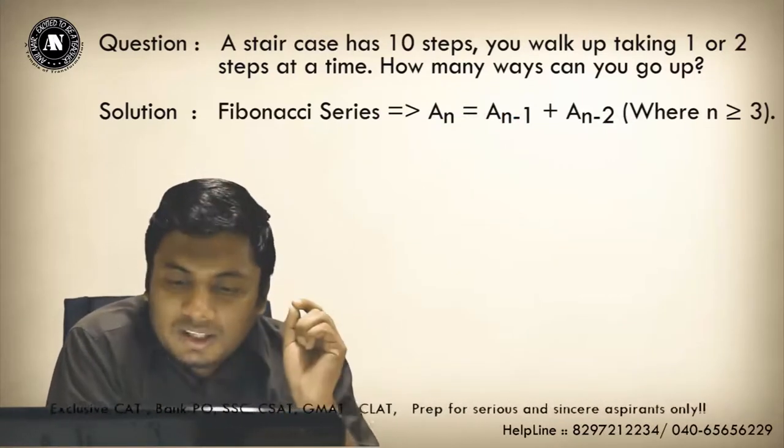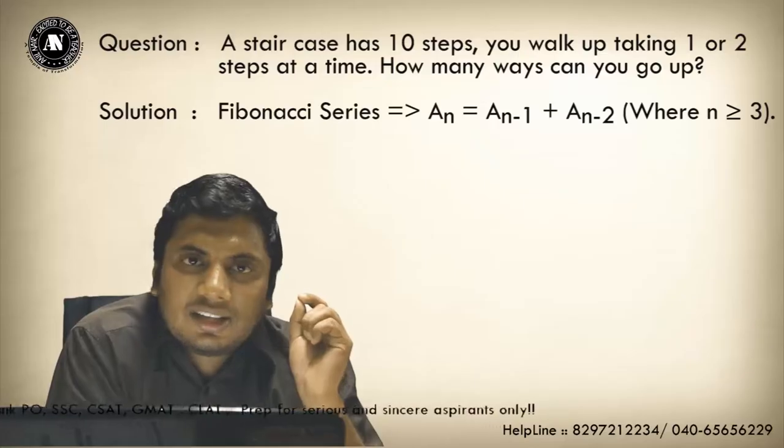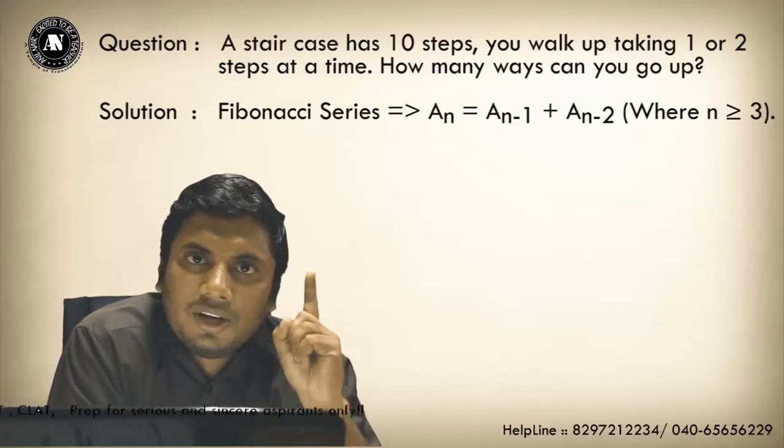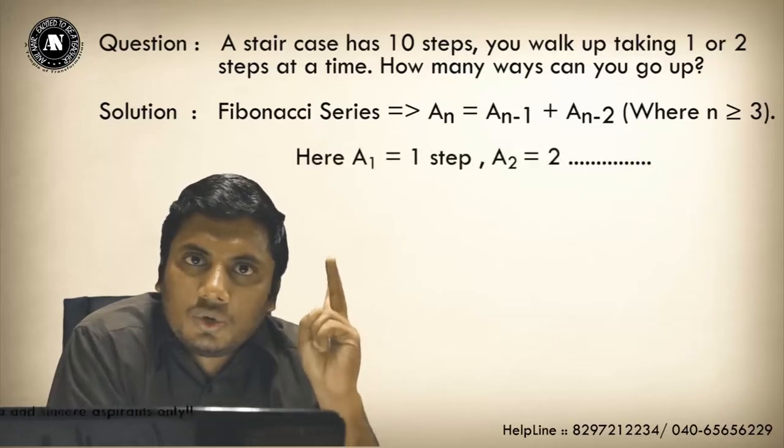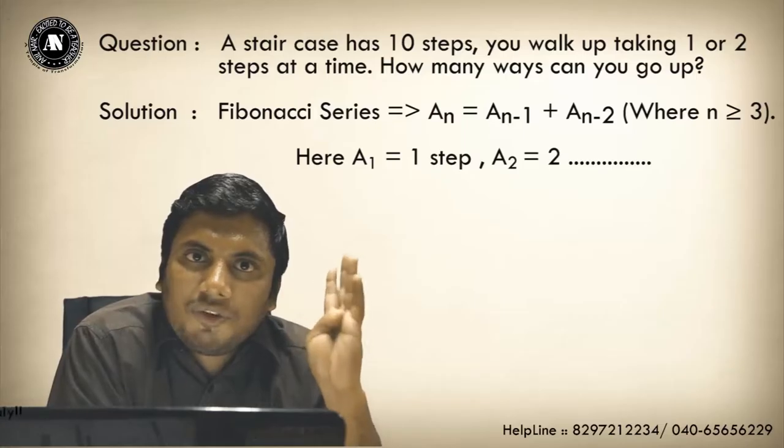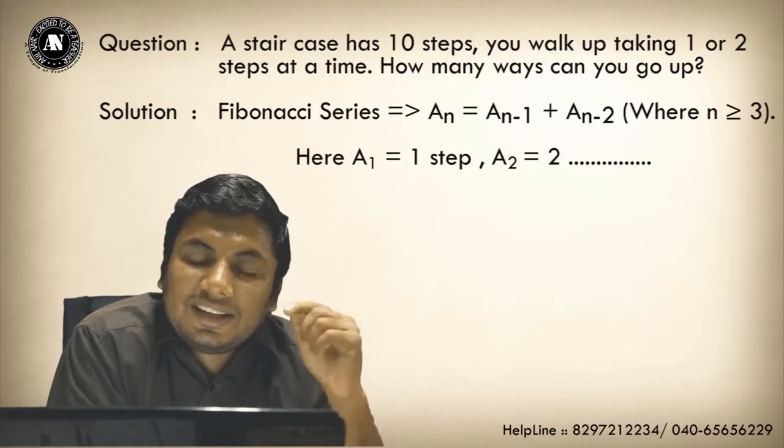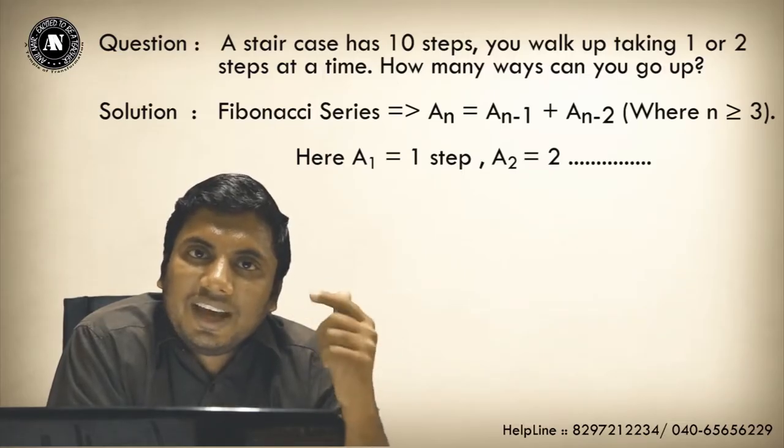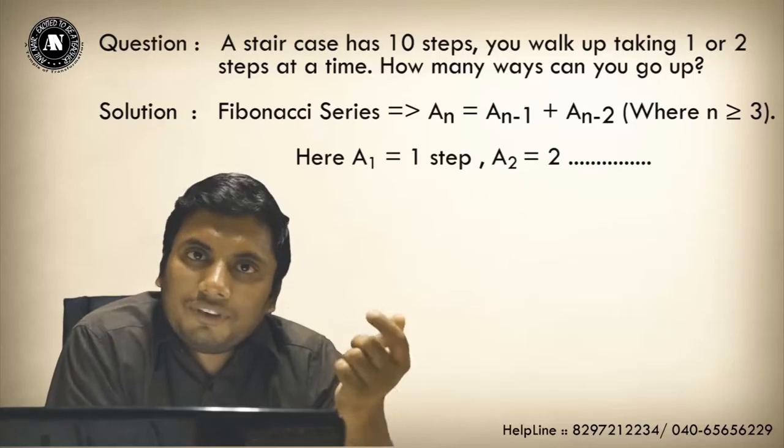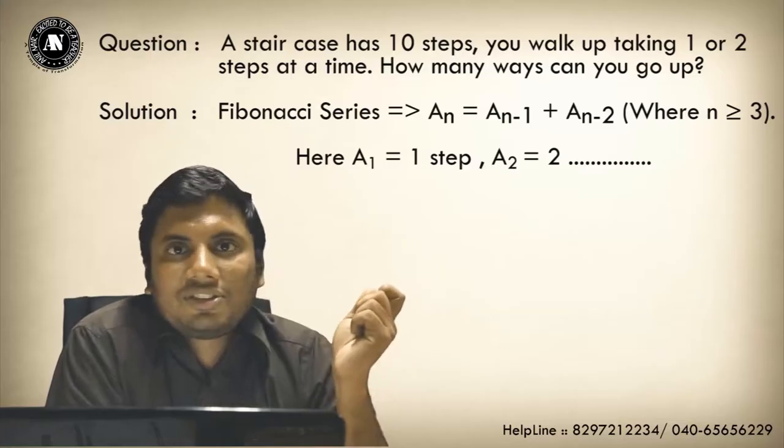So what is the question? A staircase has 10 steps. First step value is 1, second step value is 2, third step value is 3, fourth step value is 5, fifth step value is 8, sixth step value is 13, seventh step value is 21, eighth step value is 34, ninth step value is 55, tenth step value is 89.